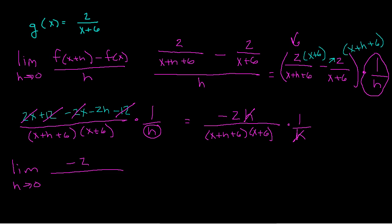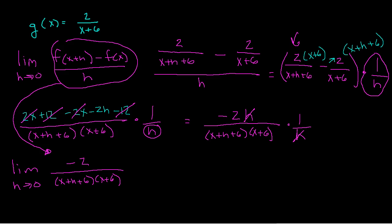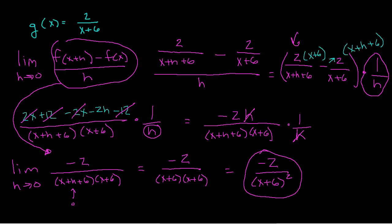I have negative 2 on top, and in my denominator I have x plus h plus 6 times x plus 6. All of this boiled down with a lot of good algebra to this. Plugging in 0 for h gives me negative 2 over x plus 6 times x plus 6, so I get negative 2 over x plus 6 squared. I prefer this factored form over x squared plus 12x plus 36 because it's easier to evaluate at a given x value.